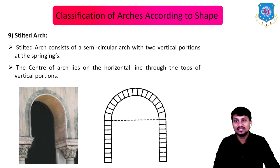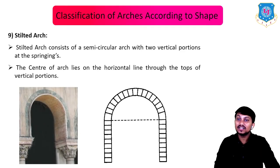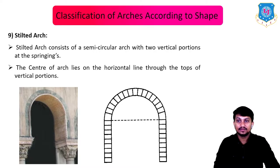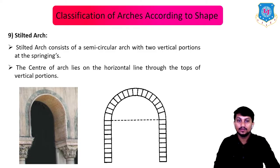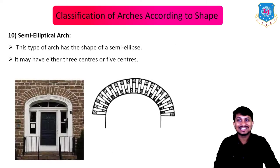Next is the stilted arch. This consists of a semicircular arch with two vertical portions at the springings. The center of the arch lies on the horizontal line through the tops of the vertical portions.